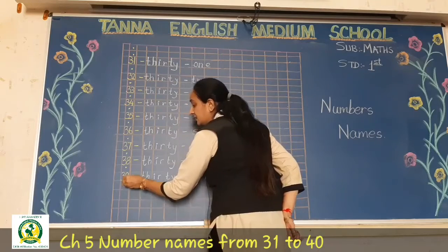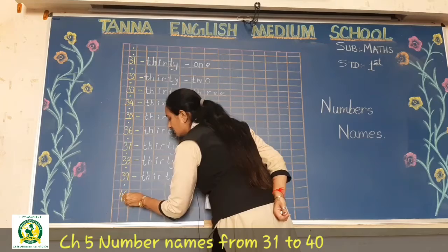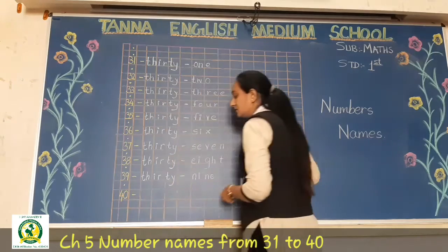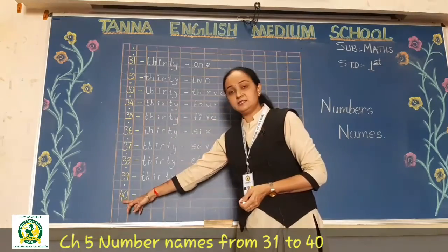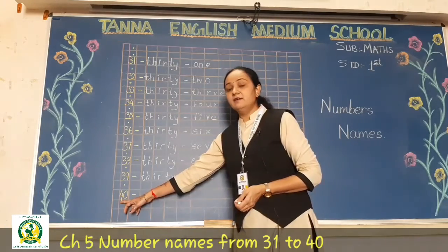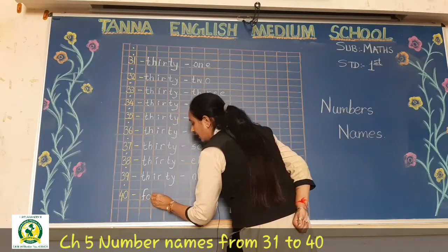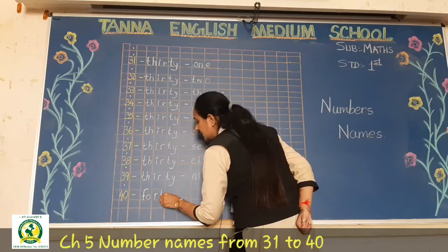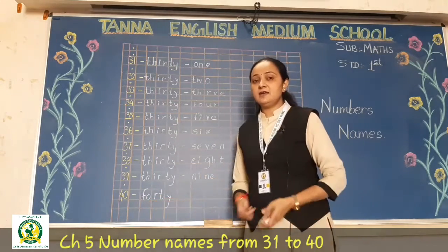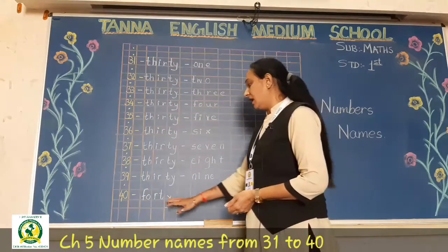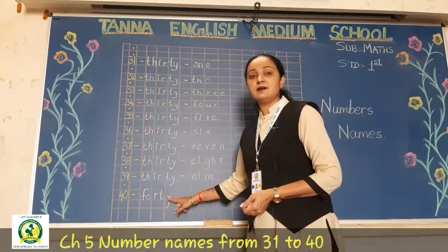So now what will come after 39? Yes — 40. Write here 40. Now students, for 40 you will not write the spelling of 30 here. You have to write the number name of 40. So write F-O-R-T-Y — 40. Important: do not write F-O-U-R-T-Y. It is F-O-R-T-Y — 40.